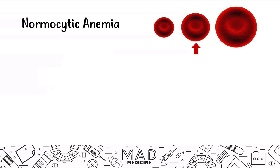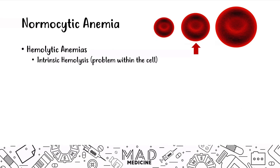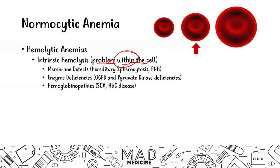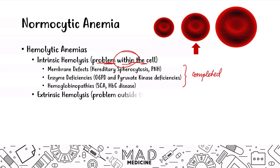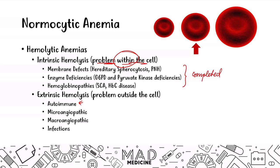Intrinsic causes of hemolysis occur because of problems within the cell — enzyme or membrane defects, or hemoglobinopathies. Extrinsic causes are issues that occur outside of the cell, within the vasculature. This includes autoimmune hemolytic anemias, which we're talking about today, as well as micro- and macroangiopathic hemolytic anemias and infections, which will be covered in subsequent videos.